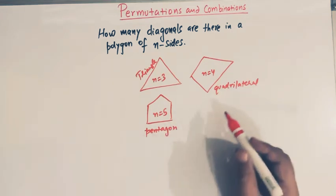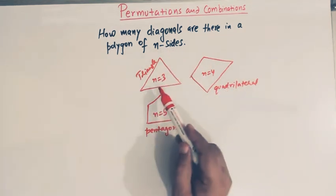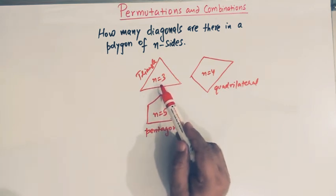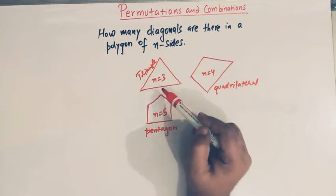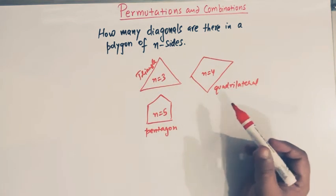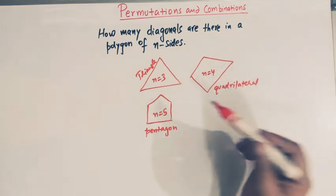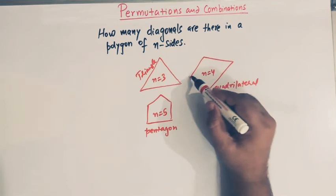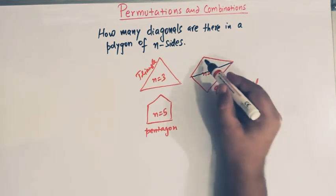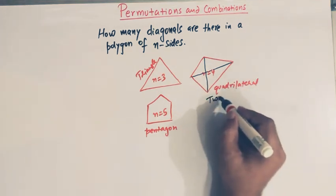Now we want to find the number of diagonals of a polygon of n sides. If we take n equal to three, this is the smallest polygon, and a triangle does not have any diagonal. For a quadrilateral, we can draw two diagonals, so a quadrilateral has two diagonals.